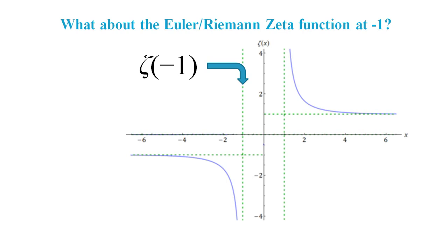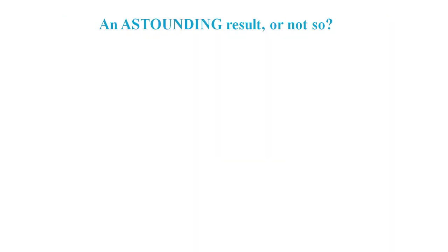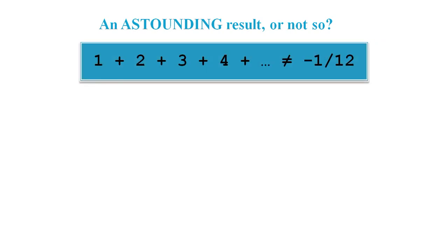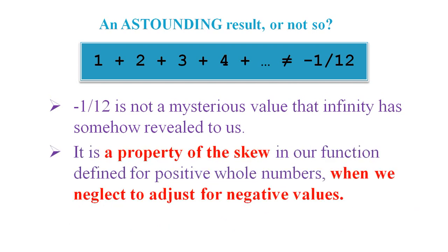So how astounding is all of this? Well, 1+2+3 and so on does not equal -1/12, and -1/12 is not some mysterious value the infinity has revealed to us. It is merely a property of the skew we get when we neglect to adjust for negative values. So maybe this is not such an astounding result after all.